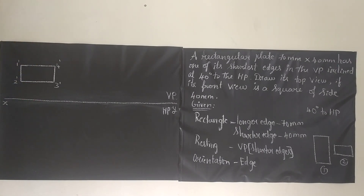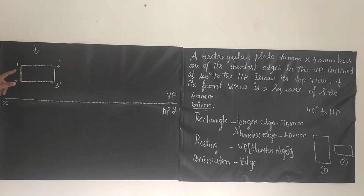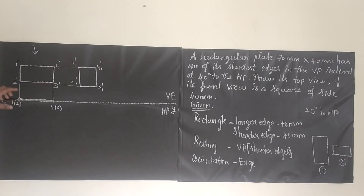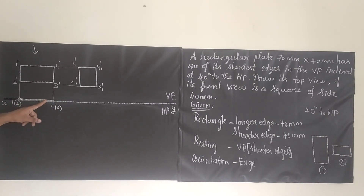Next we are going to see the top view. When you are seeing the rectangle from the top, you can see only a line. Point 1 can be seen, but point 2 will be hidden, so we write it as 1 and bracket 2. Point 4 can be seen but point 3 cannot, so we write 3 in brackets as hidden. This is a straight line, and this line will be lying on the reference line itself.